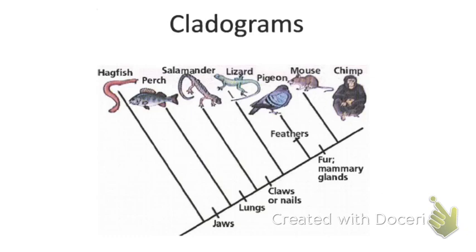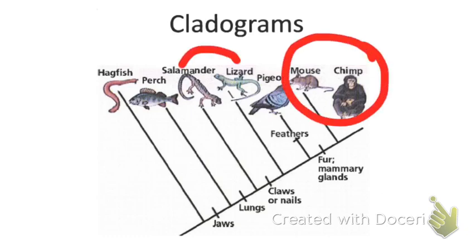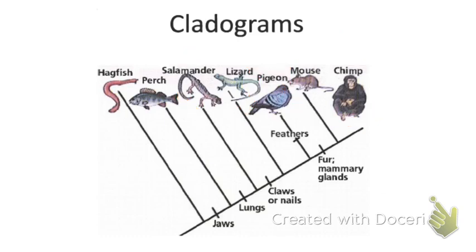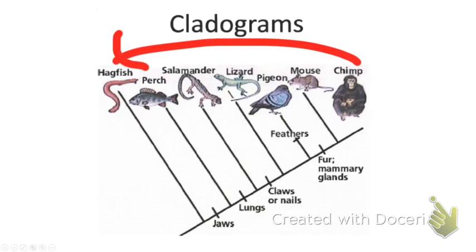The different characteristics help us determine how organisms are related. The closer two organisms are together, the more related they are. In this example, the closest relative to the chimp is the mouse. The organism most unrelated to the chimp is the hagfish, because the hagfish is furthest away. You have to compare the distance between organisms to determine how related they are. Remember that your characteristics and traits are marked at the bottom of the diagram.